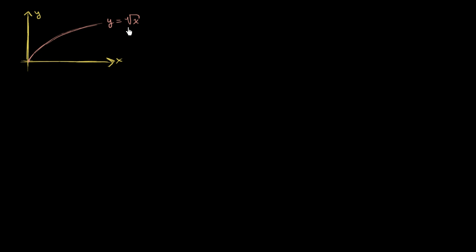Here we've graphed the function y is equal to the square root of x. And we're going to create a solid of revolution. But we're not going to do it by rotating this around the x or the y-axis. Instead, we're going to rotate it around another somewhat arbitrary line. And in this case, I will rotate it around the line y is equal to 1. So let's say that this right over here is the line y equals 1. So this is what we're going to rotate it around, y equals 1.